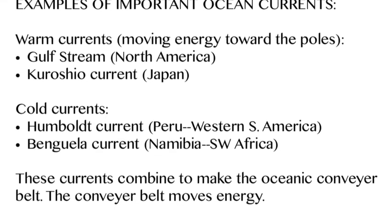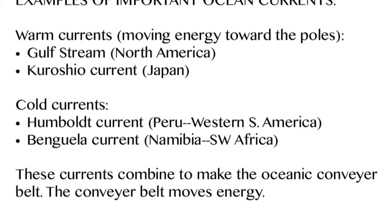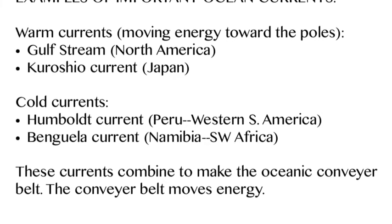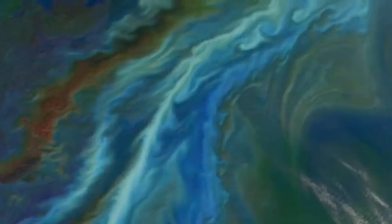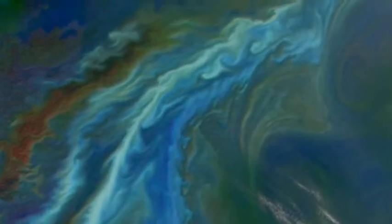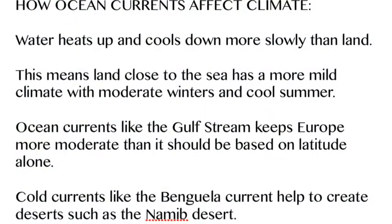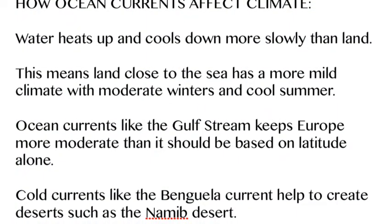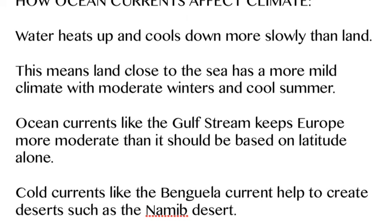When currents come back from the poles toward the equator, you get the Humboldt Current by Peru and the Benguela Current by Namibia, South Africa. Here's a picture of a water current from space. This movement of energy really affects the climate.